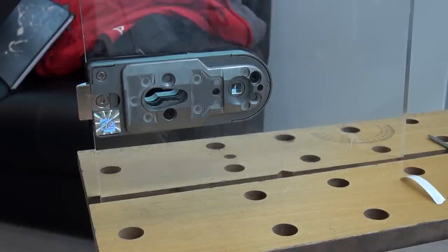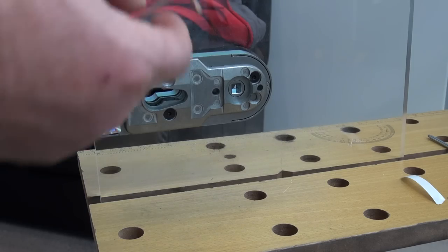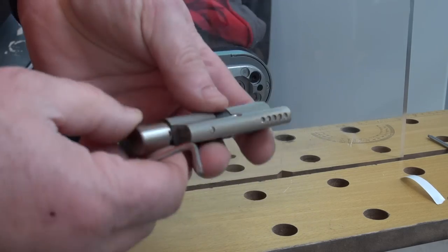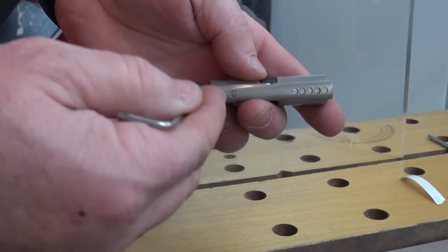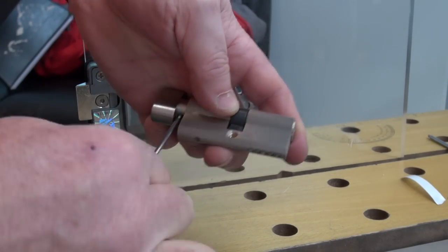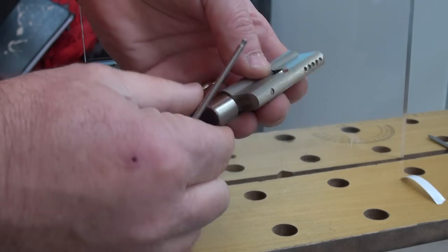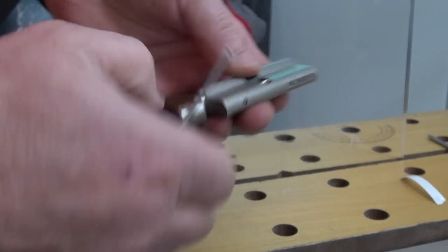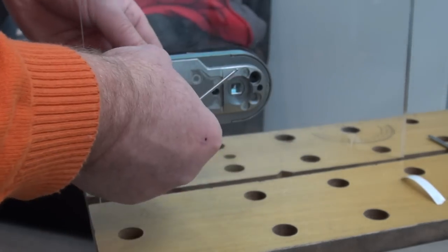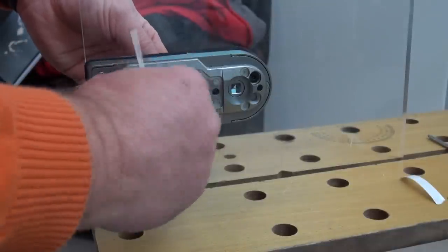The next part we like to do is we like to put the cylinder in. To do this, you'll notice on all cylinders there's a little grub screw which keeps the cylinder on. You can actually fasten this through the lock first, get it into position.